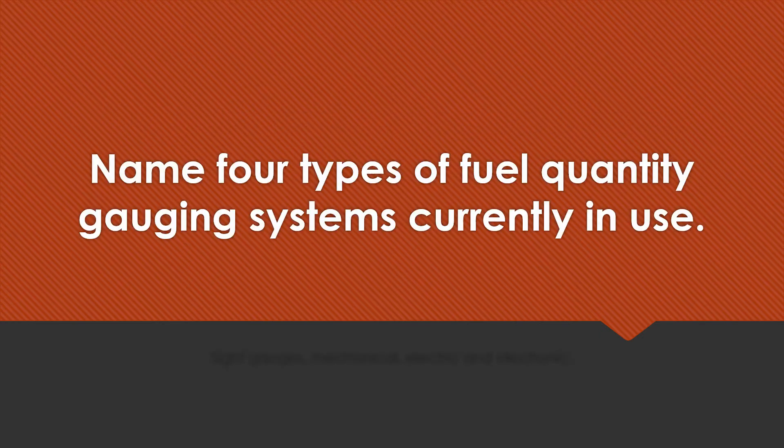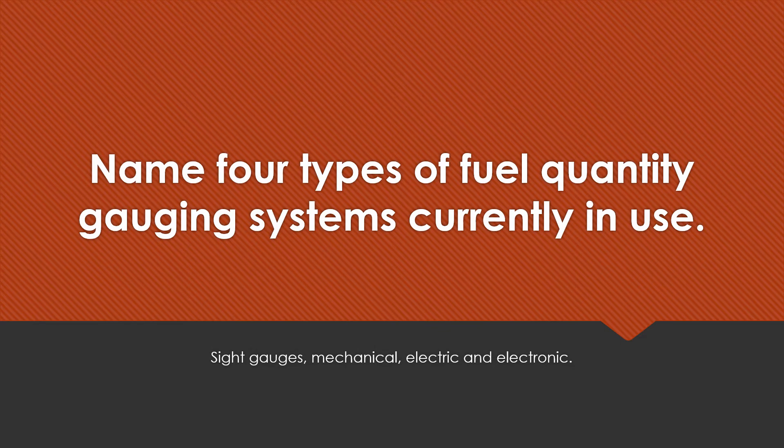Name four types of fuel quantity gauging systems currently in use. Site gauges, mechanical, electric, and electronic gauges.